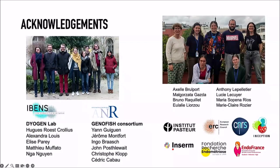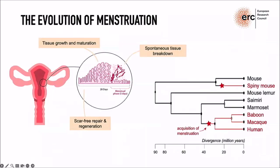I want to thank everyone in my previous lab, the DigitaGen lab at ENS, especially Hugues my former group leader, Alexandra, and obviously Elise who is first author on most of these papers. Thanks to all our colleagues on the GenoFish consortium. I also want to give a shout out to my new team at the Curie Institute — we now work on the evolution of the uterus and menstruation, specifically how the uterine lining acquired the process of breaking down and regenerating monthly, which appeared convergently several times in mammal evolution.